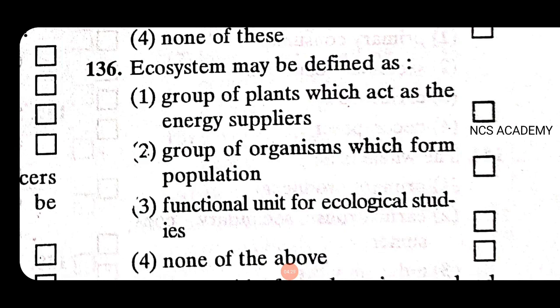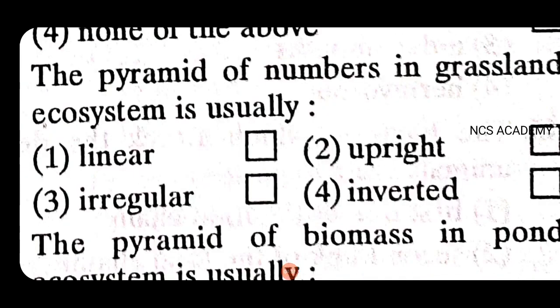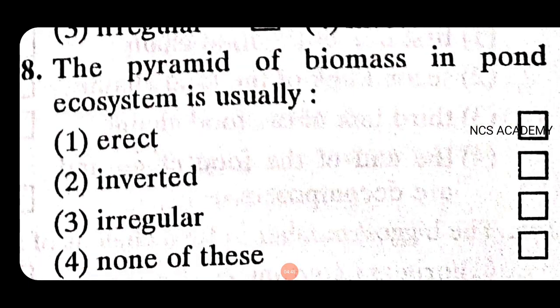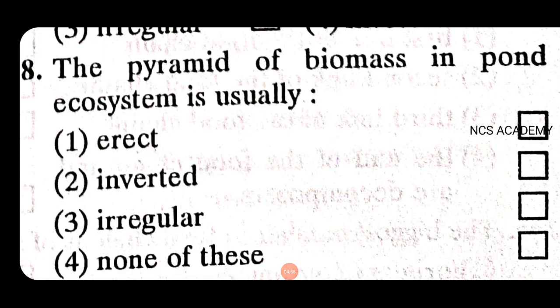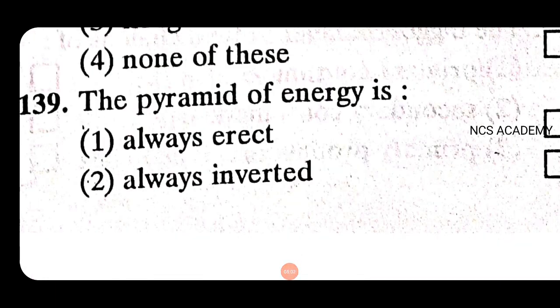An ecosystem may be defined as a functional unit for ecological studies — that is the right answer. The pyramid of numbers in grassland ecosystems is usually upright. The pyramid of biomass in pond ecosystems is usually inverted. The pyramid of energy is always erect — the right answer is one.